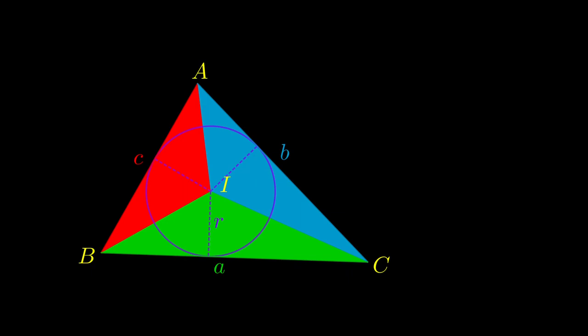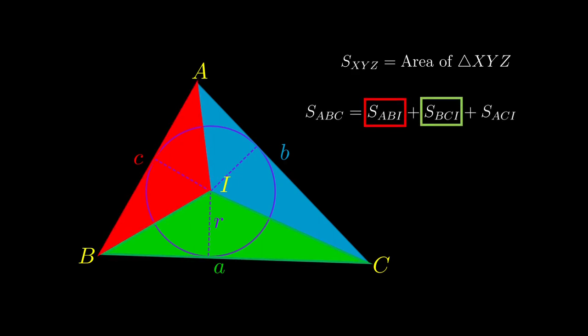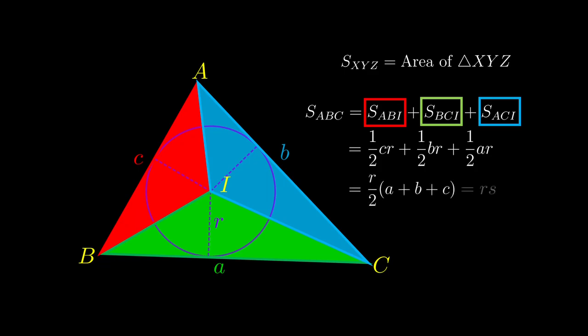These two proofs both in turn rely on these two results. First, we have a novel way to calculate the area of a triangle using this diagram, where I here is the incenter of the large triangle. To save space, we use the notation that S with the subscript xyz meaning the area of the triangle stated. Then we have the large triangle being the three smaller triangles combined. And we can apply half base times height to each of the smaller triangles, and get that the area can also be calculated by the product of r, the inradius, and s, the semi-perimeter.